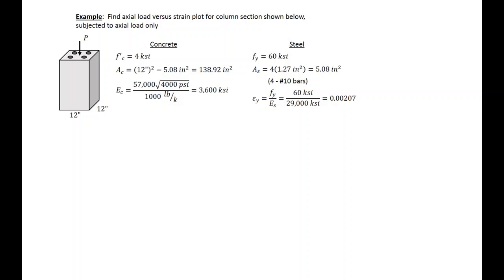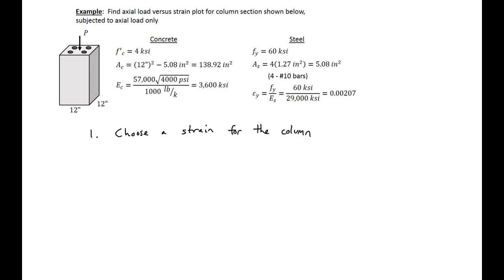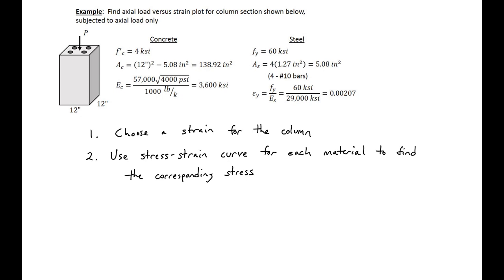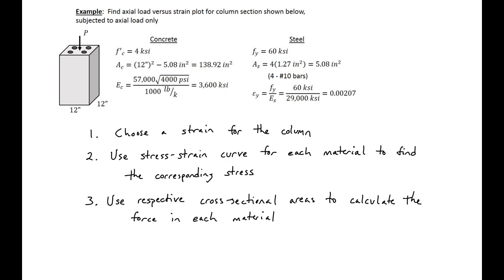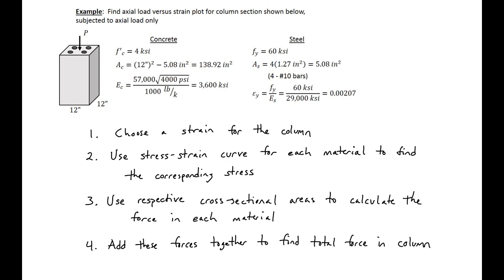In this example we're going to look at how we can use compatibility to determine the behavior of a reinforced concrete column under pure axial load. We'll start by choosing a strain for the column — the strain will occur in both the concrete and the steel. We'll then use the stress-strain curve for each material to find the corresponding stress, use cross-sectional areas to calculate the force in each material, and add these forces to find the total force. We can repeat this for different strains to find a strain versus load response, working either from strain to force or force to strain. In this example we'll work from strain to force.